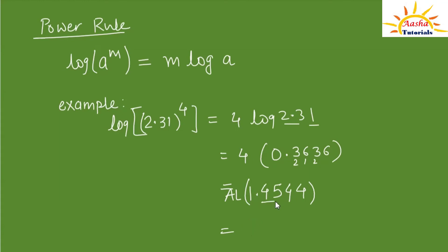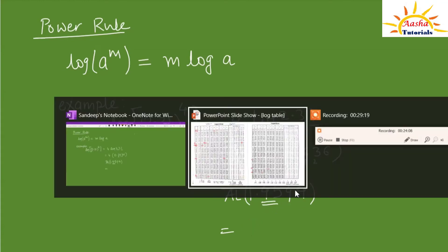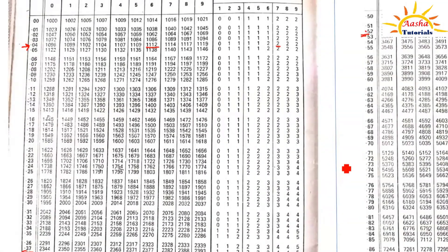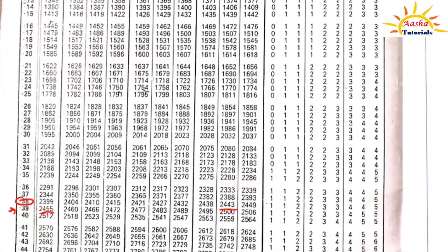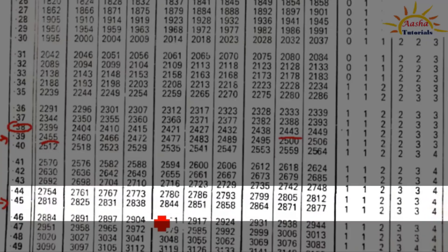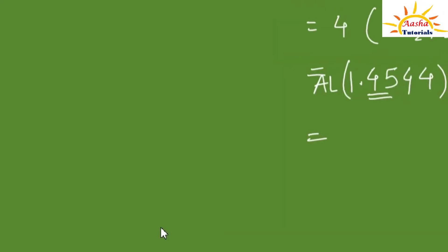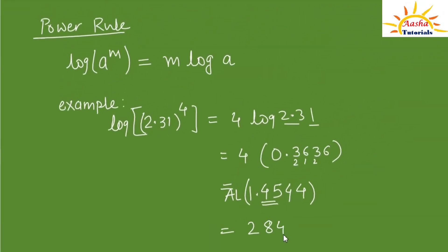We find the antilog of 0.45 in the 4th column and add the mean difference from the 4th column, which is 3. The antilog value is 2844, and adding 3 gives 2847. So the antilog of 0.4544 is 2847.